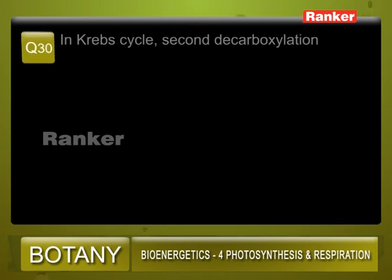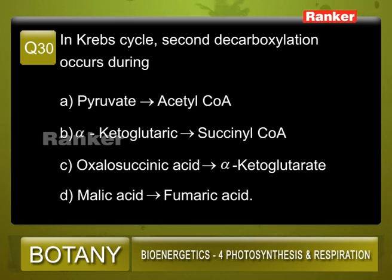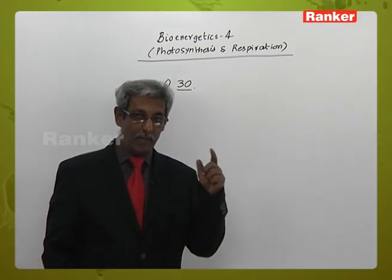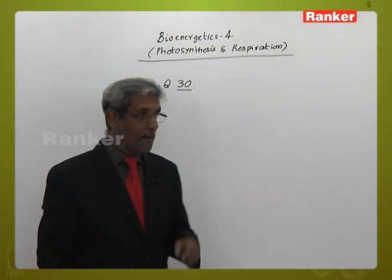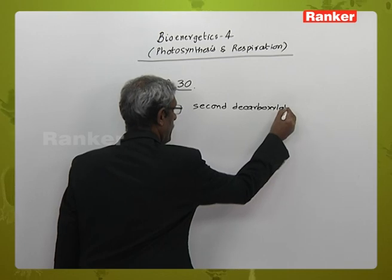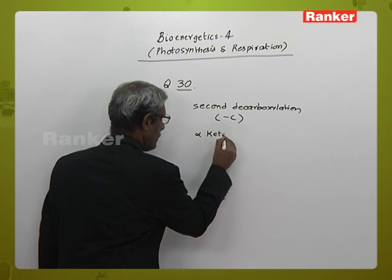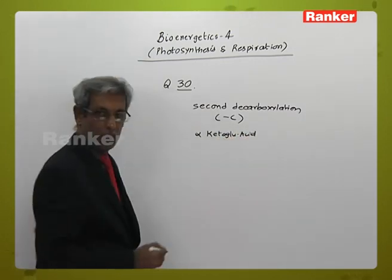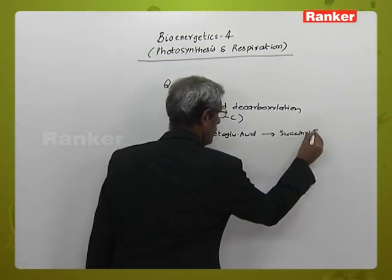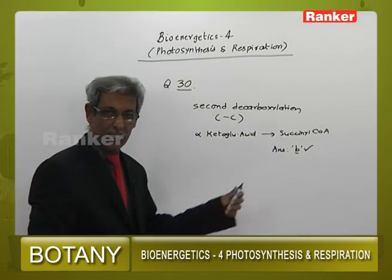Question number 30: In Krebs cycle, second decarboxylation occurs during — A: pyruvate to acyl coenzyme A, B: alpha-ketoglutaric acid to succinyl coenzyme A, C: oxalosuccinic acid to alpha-ketoglutaric acid, D: malic acid to fumaric acid. The first decarboxylation is pyruvic acid to acyl coenzyme A. The second decarboxylation — where carbon is lost again — occurs when alpha-ketoglutaric acid is converted to succinyl coenzyme A. The answer is B.